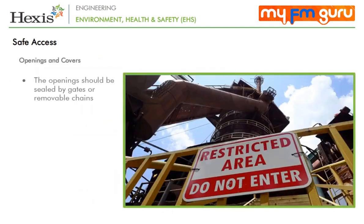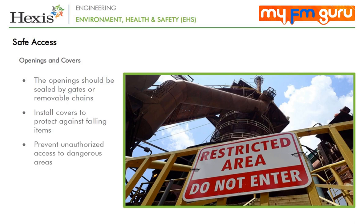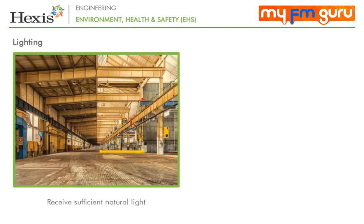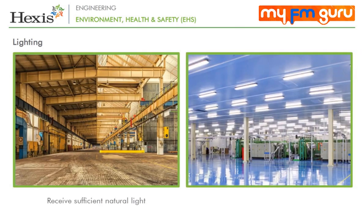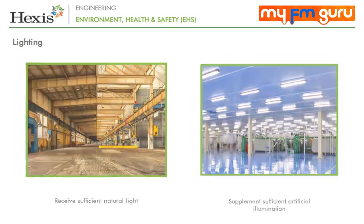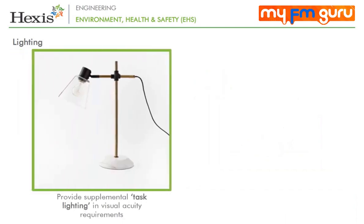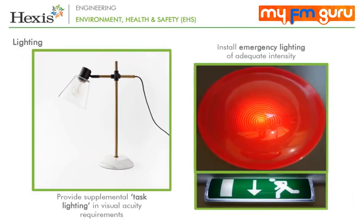Openings should be sealed by gates or removable chains, and covers should be installed to protect against falling items. Measures should be taken to prevent unauthorized access to dangerous areas with appropriate signages. The quality of lighting in a workplace can have a significant effect on productivity. Workplaces should receive an adequate amount of natural light and be supplemented with sufficient artificial illumination to promote worker safety and enable safe equipment operation. Emergency lighting of adequate intensity should be automatically activated upon failure of the principal light source to ensure safe shutdown and evacuation.